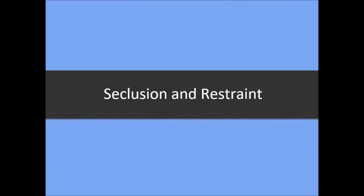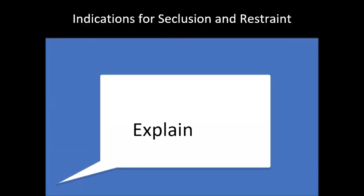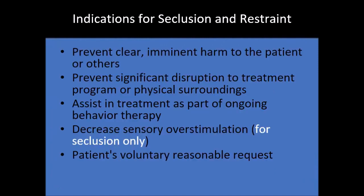Moving on to seclusion and restraints: the indications include to prevent harm to the patient, to prevent significant disruption to the treatment program, or to prevent disruption to the physical surroundings, to assist in the treatment of the patient as part of ongoing behavior therapy, to decrease sensory overstimulation — which is applicable only for seclusion, not restraint — and at the patient's voluntary reasonable request.